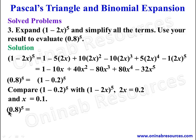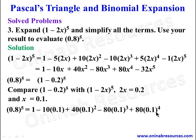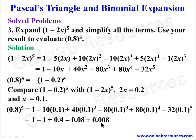Substituting x = 0.1: 0.8⁵ = 1 − 10(0.1) + 40(0.1)² − 80(0.1)³ + 80(0.1)⁴ − 32(0.1)⁵. Simplifying each term: 1 − 1 + 0.4 − 0.08 + 0.008 − 0.00032 = 0.32768. This completes the evaluation.